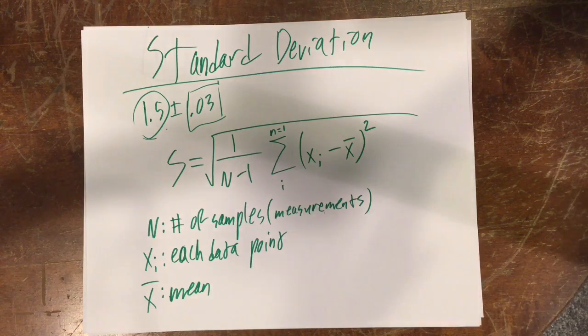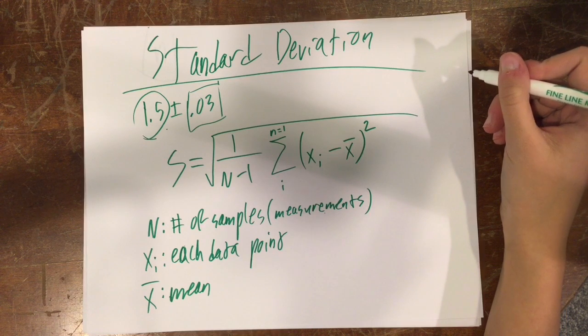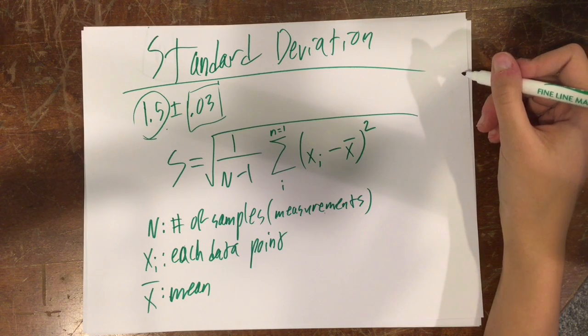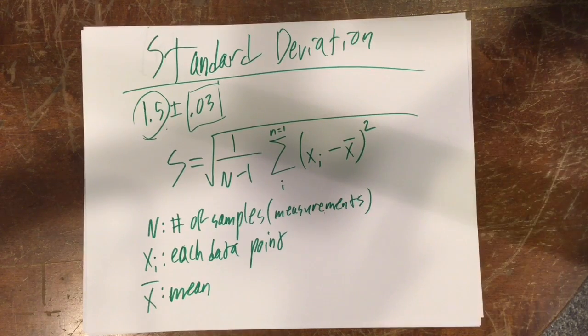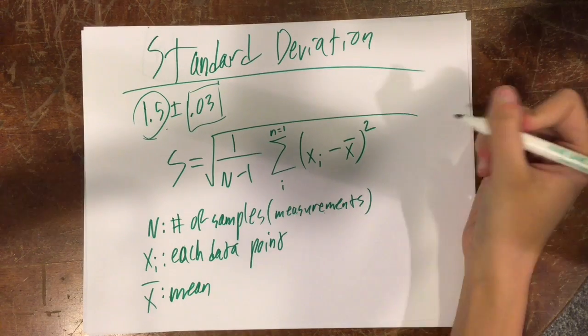Okay, so I'm going to be talking about standard deviation, which is a way to get error when there is no accepted value for the number you are trying to do error on. And then I'm going to show an example.